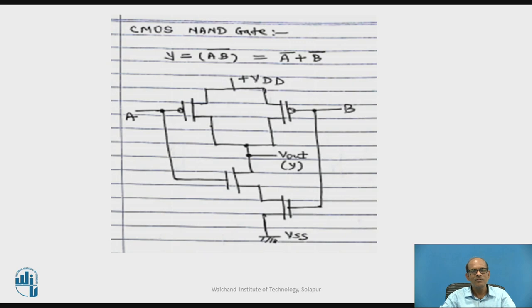So Y equals AB bar. Only when both inputs are 1 is the output 0; under all other input conditions, the output is 1.